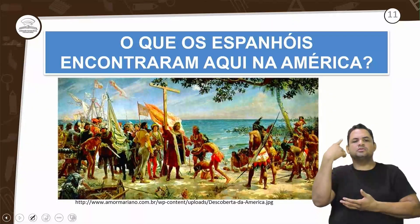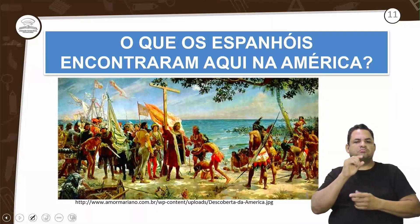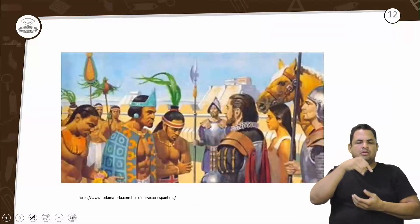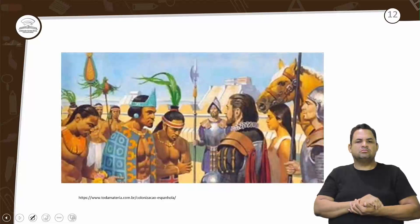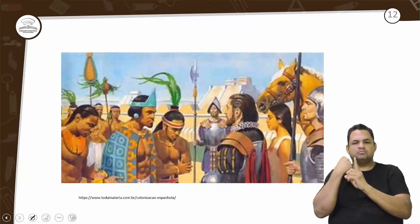O que os espanhóis encontraram na América? Eles vão encontrar uma sociedade altamente desenvolvida. Encontram os incas — que já estudamos em aulas anteriores, com seu reino nos quatro cantos da América do Sul — os maias e os astecas, mais para a América do Norte e Central. São povos com culturas e tradições diferentes, mas com uma sociedade organizada.